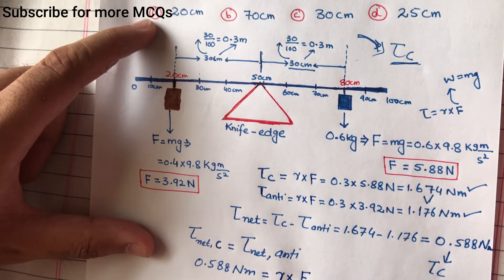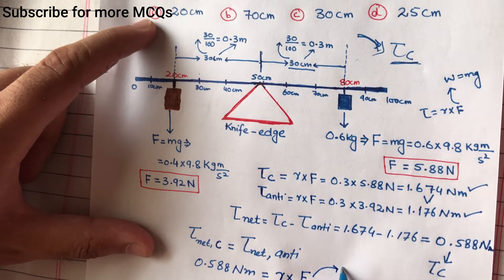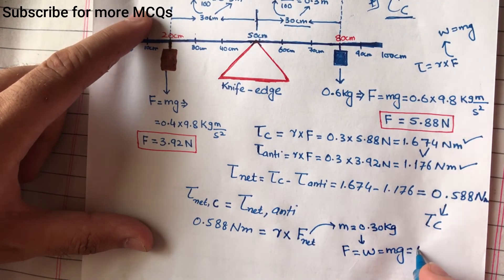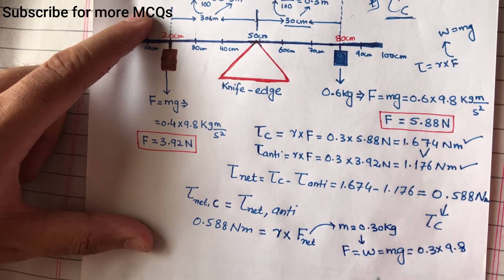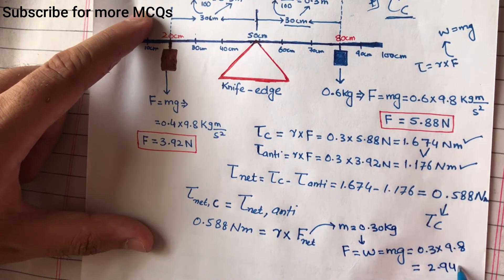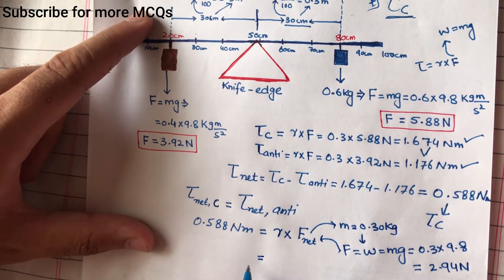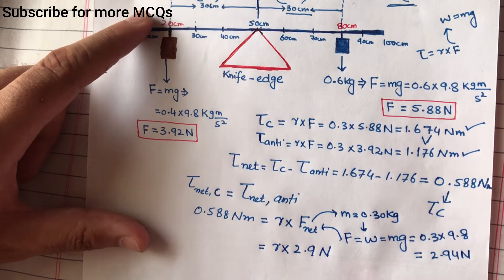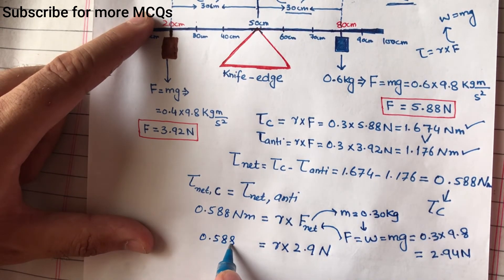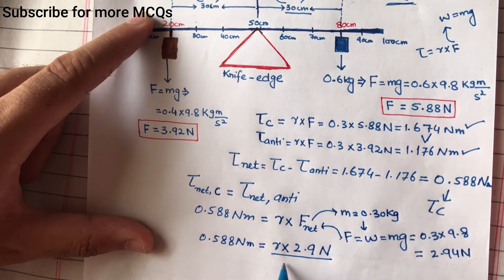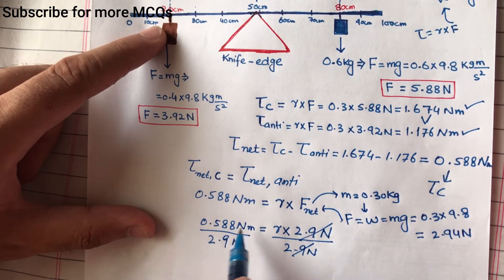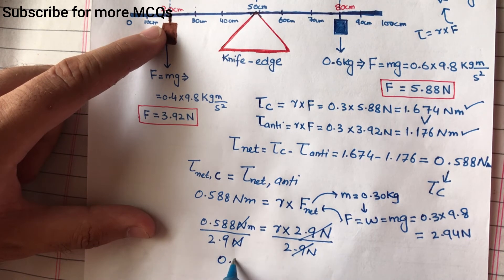Mass = 0.3 kg دیا گیا ہے۔ اس کو Newton میں change کریں: W = mg = 0.3 × 9.8 = 2.94 Newton۔ تو 0.588 = r × 2.94۔ r معلوم کرنے کے لیے دونوں sides کو 2.94 Newton پر divide کریں گے — Newton Newton کے ساتھ cancel ہو جائیں گے — تو r = 0.2 meter۔